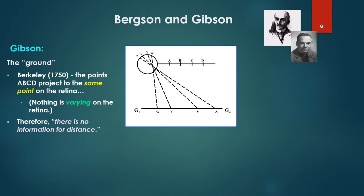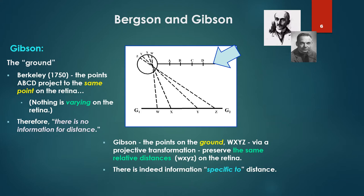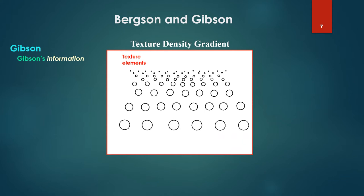So let's look at this quote 'information'. Barclay, roughly 1750, had noted that the points ABCD along the top line there all project to exactly the same spot on the retina. Nothing is varying on the retina. Therefore there is no difference between D and A. That is, we cannot see that D is farther away than A, or B or C. There is no information for distance in this conception. Gibson pointed out, let's focus on the ground, G1, G2. There, the points in the ground WXYZ, via projective transformation onto the retina, preserve the same relative distances WXYZ on the retina. That is, there is indeed information specific to distance on the retina, just reversed.